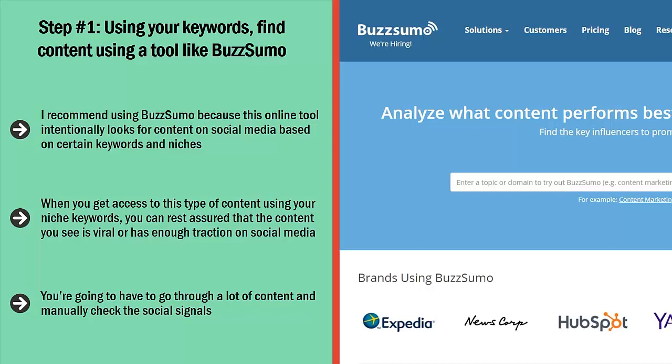It then ranks this material based on their social engagement levels. When you get access to this type of content using your niche keywords, you can rest assured that the content you see is viral or has enough traction on social media. You don't have to use BuzzSumo — there are other similar tools out there. Regardless, you need to use that kind of tool.